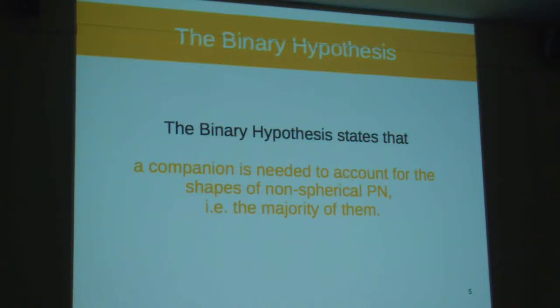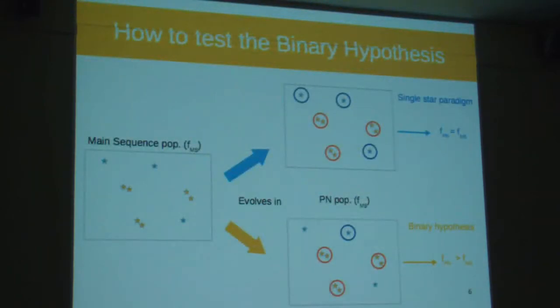So to test this hypothesis, we can test it in a simple way, conceptually simple, by getting the binary fraction of central stars. So if we have a main sequence population here with 50% binary stars and 50% single stars, then if this population evolves according to the single-star paradigm, which is our current understanding of the evolution of PN, then the binary fraction of central stars will be the same as the progenitor's binary fraction. However, in the binary hypothesis, only binary stars make a PN, and eventually a few single stars. And in this case, the binary fraction of central stars is higher than the main sequence binary fraction.